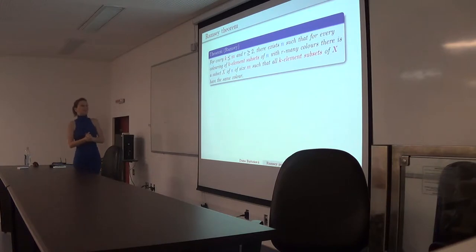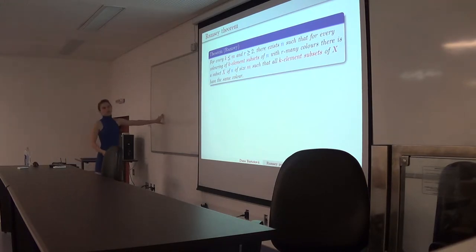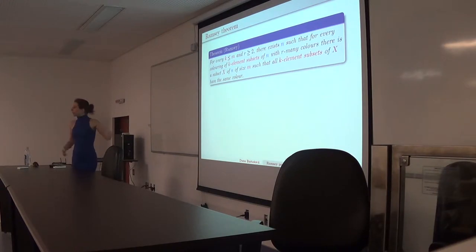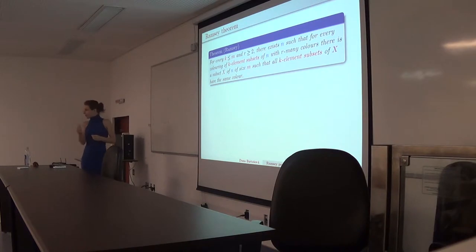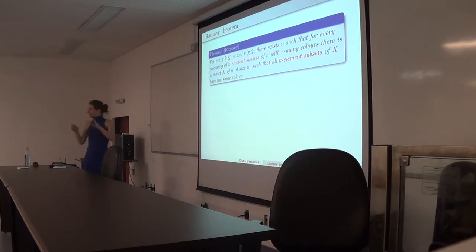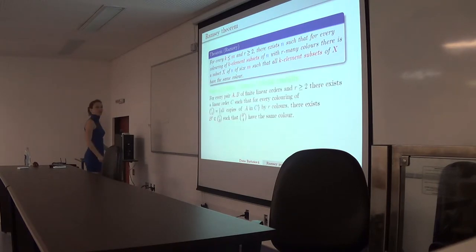In general, if you have two numbers k and m — where k was two and m was three — and a number of colors, there exists a large number n such that for every coloring of k-element subsets of this large set with that many colors, there is a subset of medium size such that all small subsets of that set have the same color. Whenever you have a pattern and go large enough, you will find that pattern — these are Ramsey-type statements. Anything of this sort is called Ramsey theory.